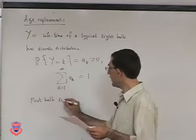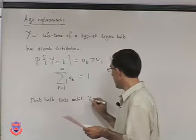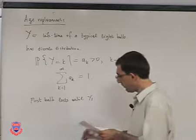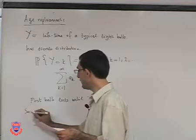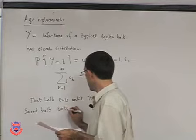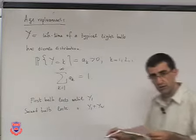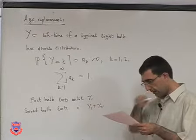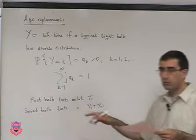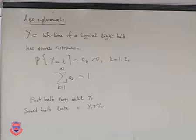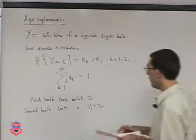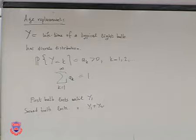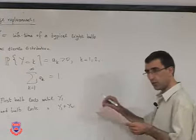As soon as the first bulb fails, it is replaced with a new bulb. The second bulb will then last until Y_1 plus Y_2. As soon as the second bulb fails, you replace it with a third bulb, and the third bulb lasts until Y_1 plus Y_2 plus Y_3. For the n-th bulb, the total service provided is Y_1 plus Y_2 plus ... plus Y_n.